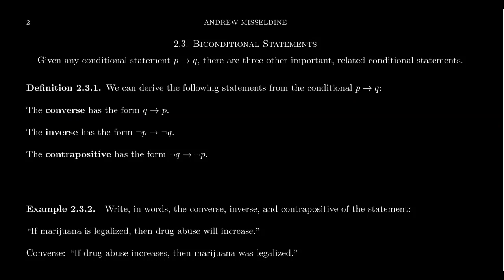Notice that the converse switches the roles of premise and conclusion. So for our original conditional statement, the premise was P and the conclusion was Q. For the converse, the original conclusion Q is now the premise, and the original premise P is now the conclusion. So the converse just changes the direction of the implication: if the statement was P implies Q, the converse is Q implies P.